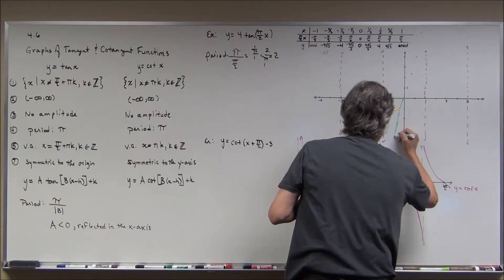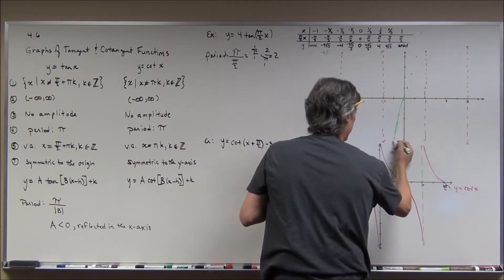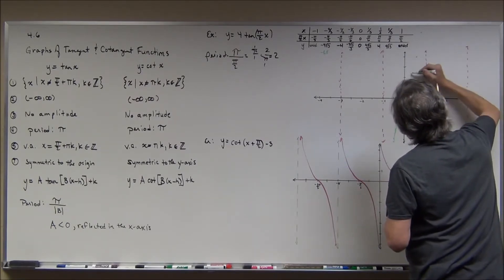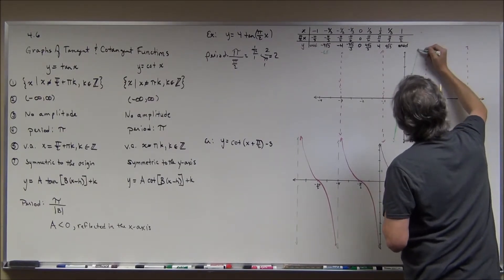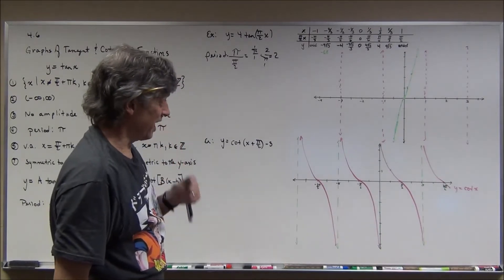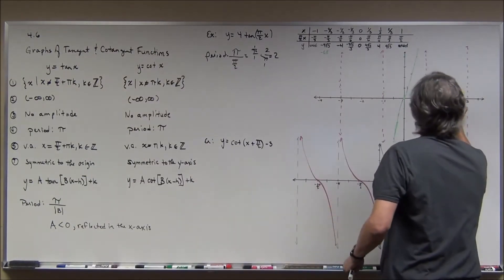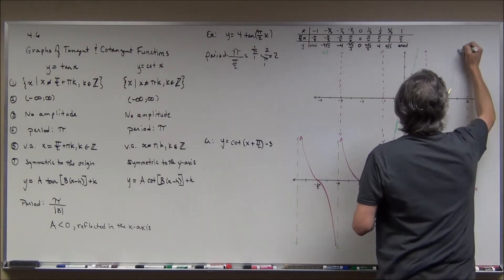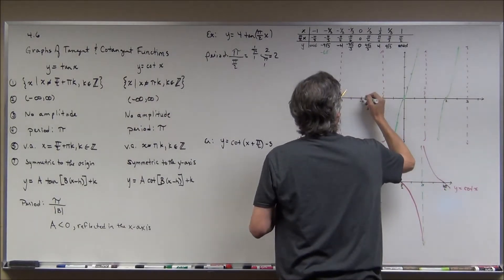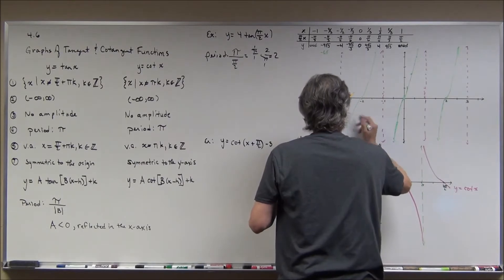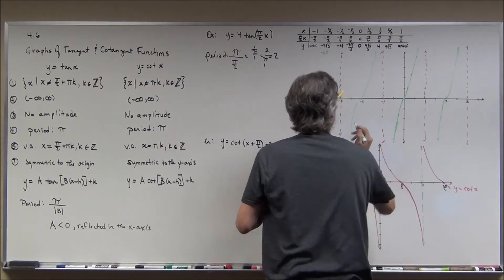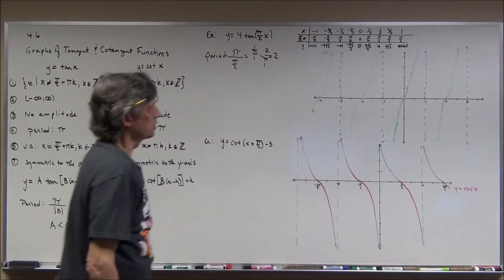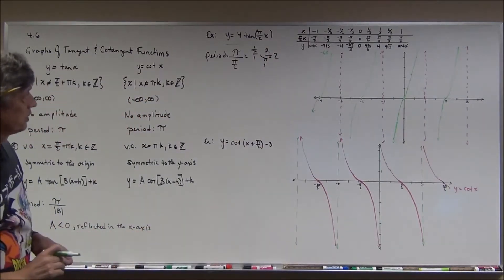You can see how steep it is — it comes right through the origin and shoots up and down very steeply near the asymptotes. I'll do my best to sketch the curve, though it almost looks like a line because it's so steep. You continue the pattern for adjacent periods, and there is the graph in green for y = 4 tan(π/2 · x).